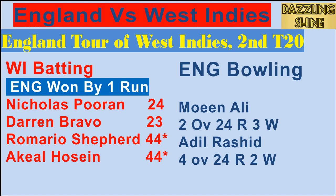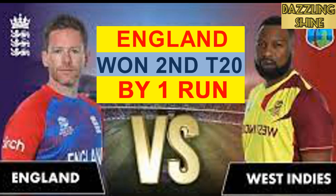Last ball of the 19th over, Topley to Shepherd — pumped through the point for four runs. Second ball of the 20th over, Mahmood to Hosein — full length ball played with hard hands, gone all the way for four. Third ball, full again and launched over long-on for four. Fourth ball, Hosein plays a massive hit over mid-wicket for six. Fifth ball, slammed over long-on for another six — fantastic batting by Hosein. Last ball, a magnificent hit over long-off for another mighty six. West Indies move to 174 for 8!